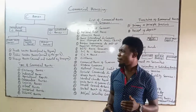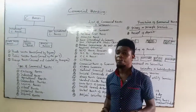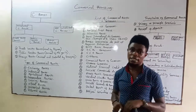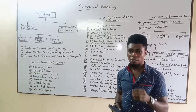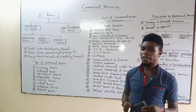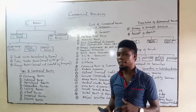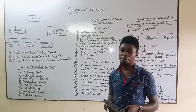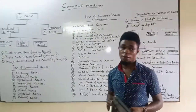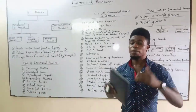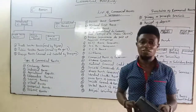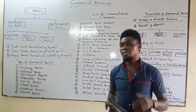We discussed the objectives of central bank and went further to talk about various types of central banks in the world. We talked about the Federal Reserve System, which is the central bank of the United States of America. We also discussed the Bank of England, the central bank of England. We went as far as discussing the central bank of Nigeria, and then the central bank of Cameroon, which belongs to the SEMAC zone with six member states.